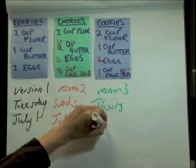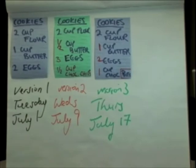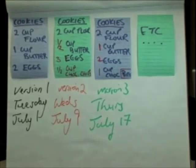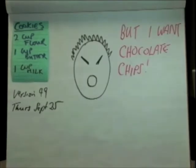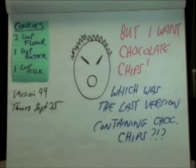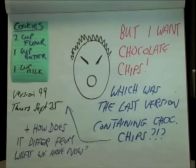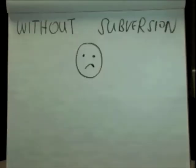A week later, we change the recipe again, and so on. A few months later, we have the 49th version of the recipe. This one has lost the chocolate chips. But our favourite niece is visiting, and she loves chocolate chips. So we really need to have a cookie recipe containing chocolate chips. How can we find the last version of the recipe that called for chocolate chips? And how does that differ from the version we have now?